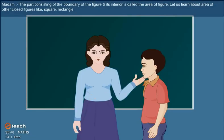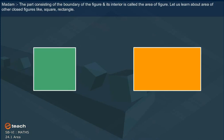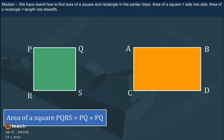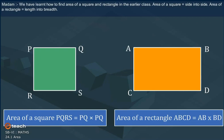The part consisting of the boundary of the figure and its interior is called the area of figure. Now, let us learn about the area of other closed figures like square and rectangle. We have learned how to find area of a square and rectangle in the earlier class. Area of square is equal to side × side. Area of rectangle is equal to length × breadth.